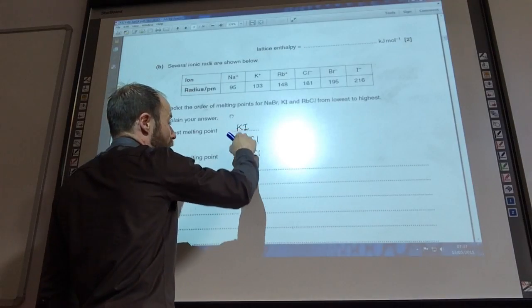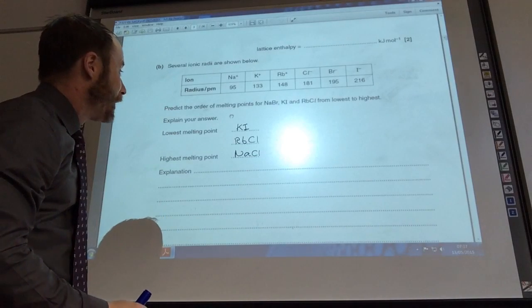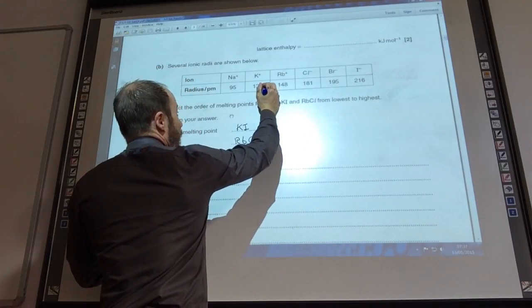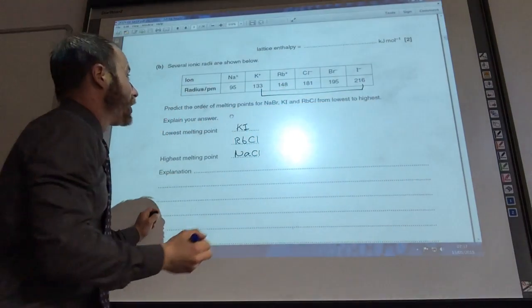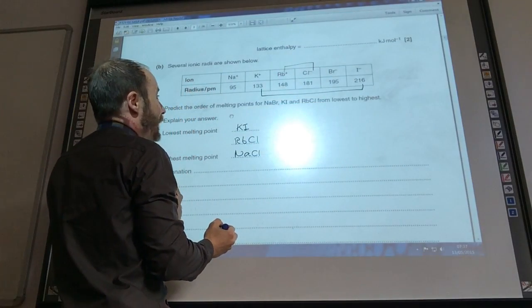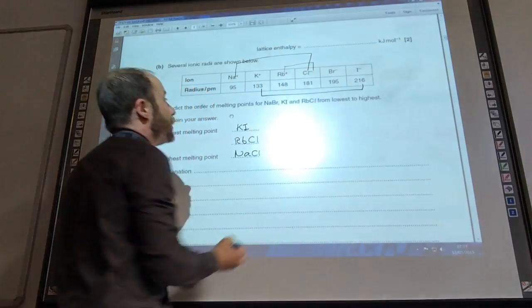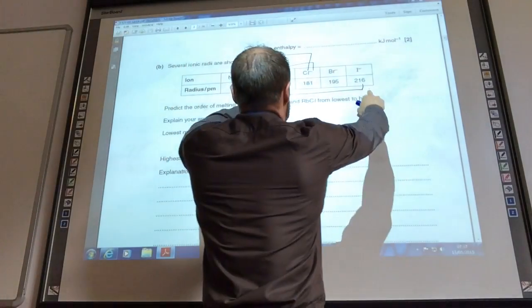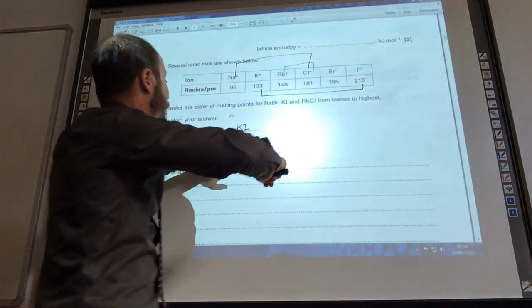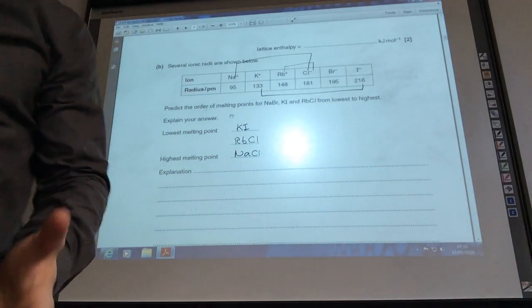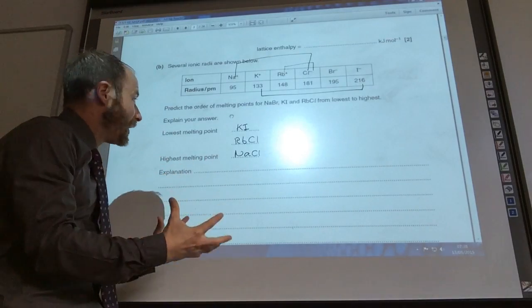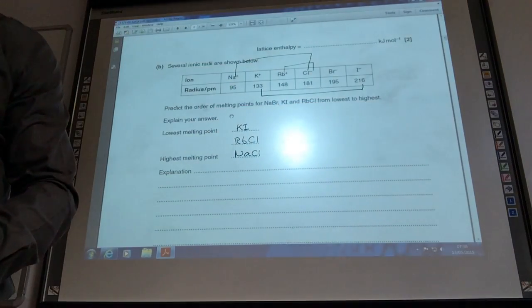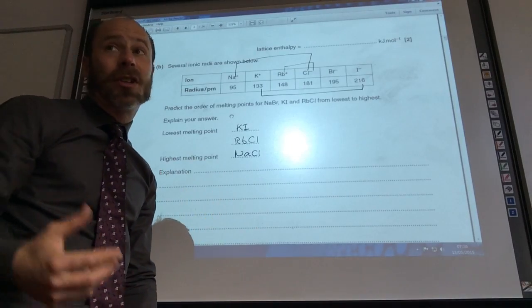You obviously need to use your periodic table for that one, but the key thing, they've all got single plus charges for group 1, single negative charges for group 7. So you're looking at the size of the ions. The two largest ions, if you look here, the distance between those two is larger than the distance between those two, which is going to be larger than the distance between those two. If they've given you the information in the table, they generally want you to use it. You need to talk about your charge on ion is going to be the same, but because the size of the ion is different, you've got a higher charge density. The higher the charge density, the stronger the ions will attract each other, and then you need more energy to overcome that attraction, hence the higher melting point.